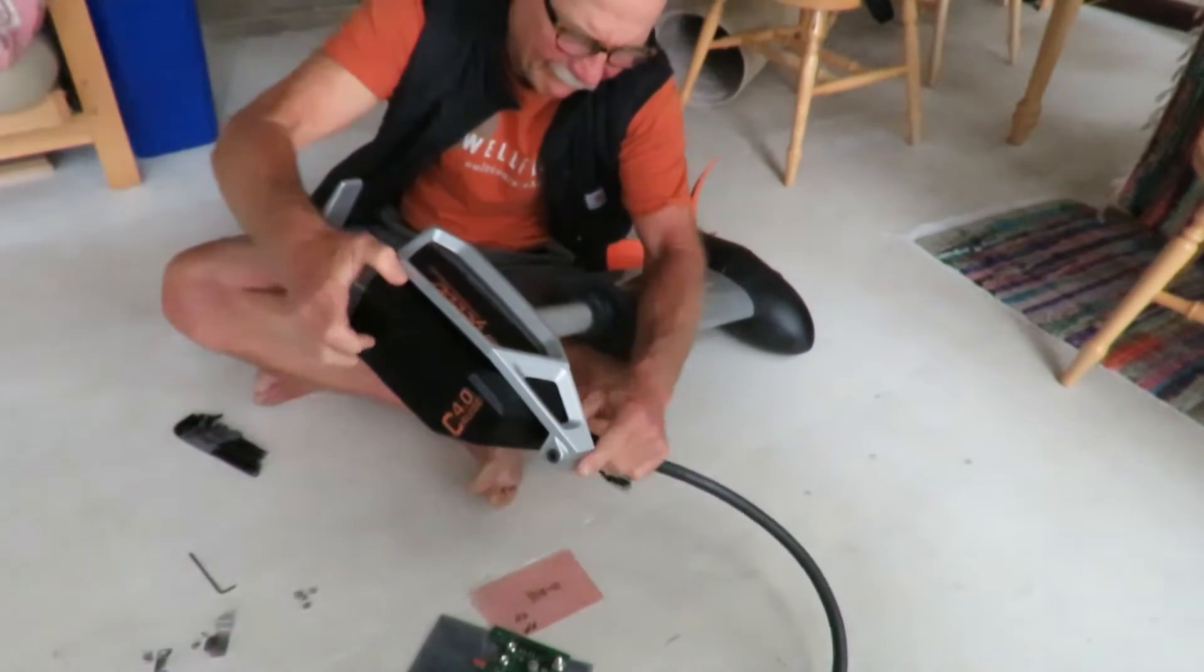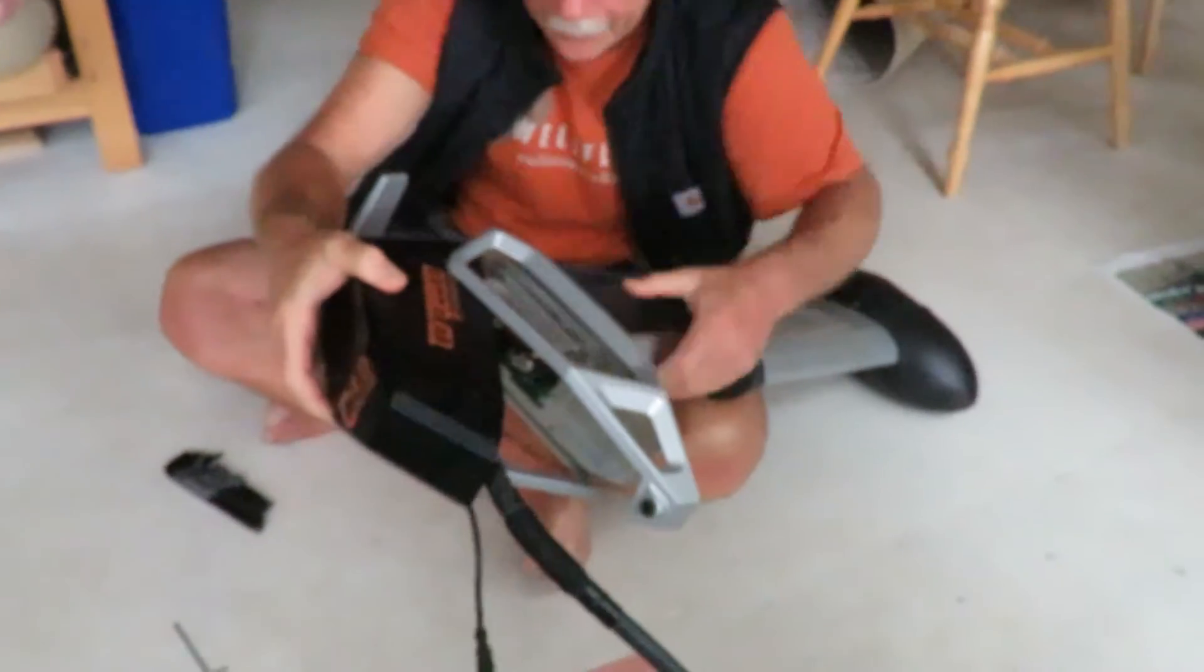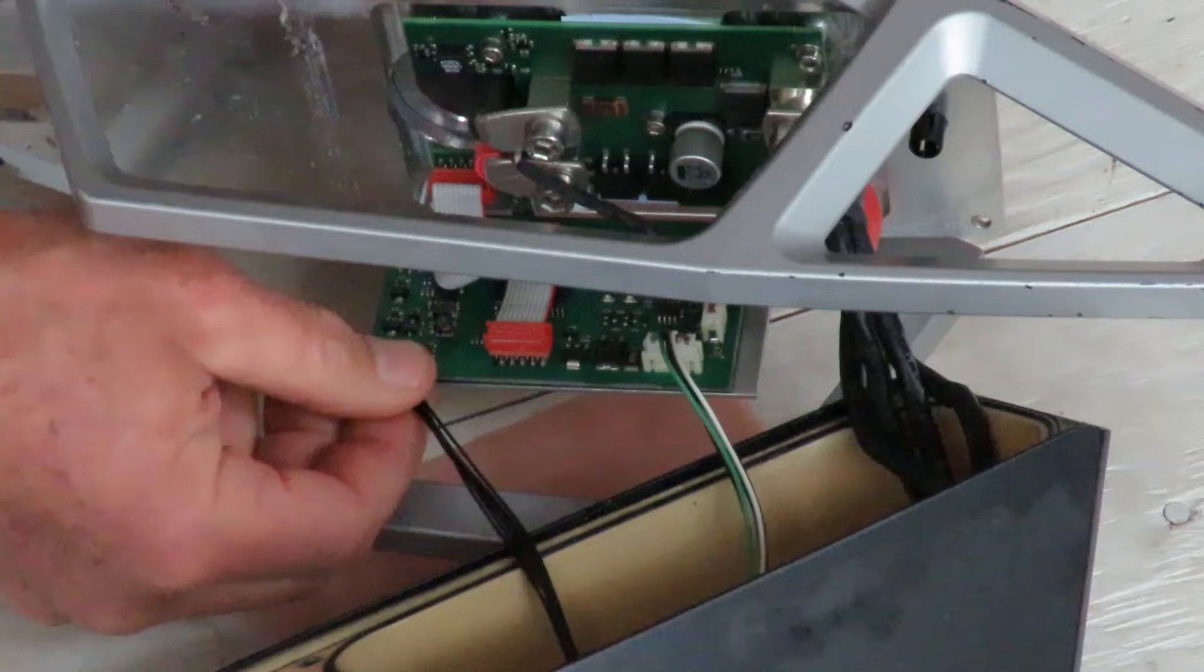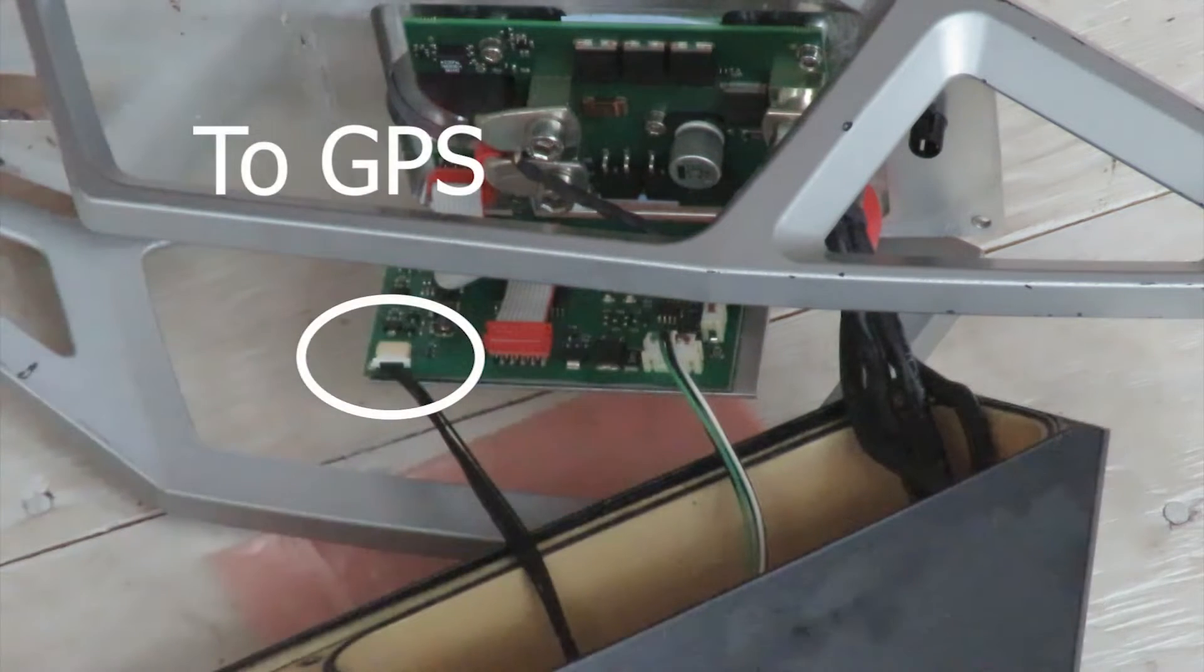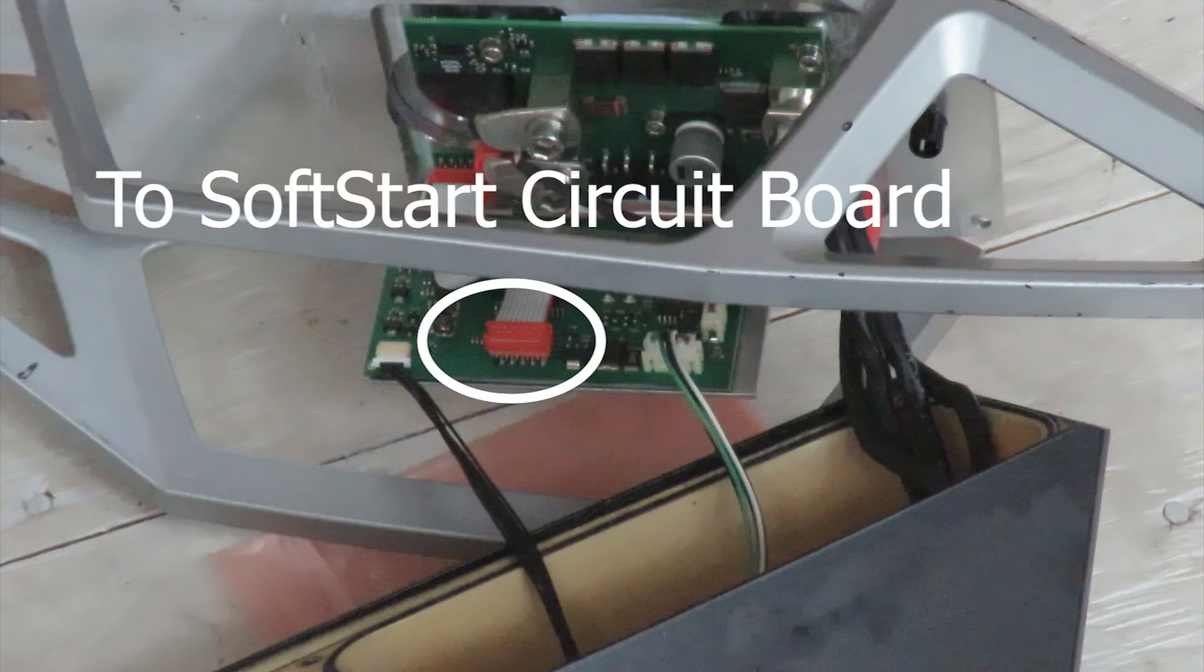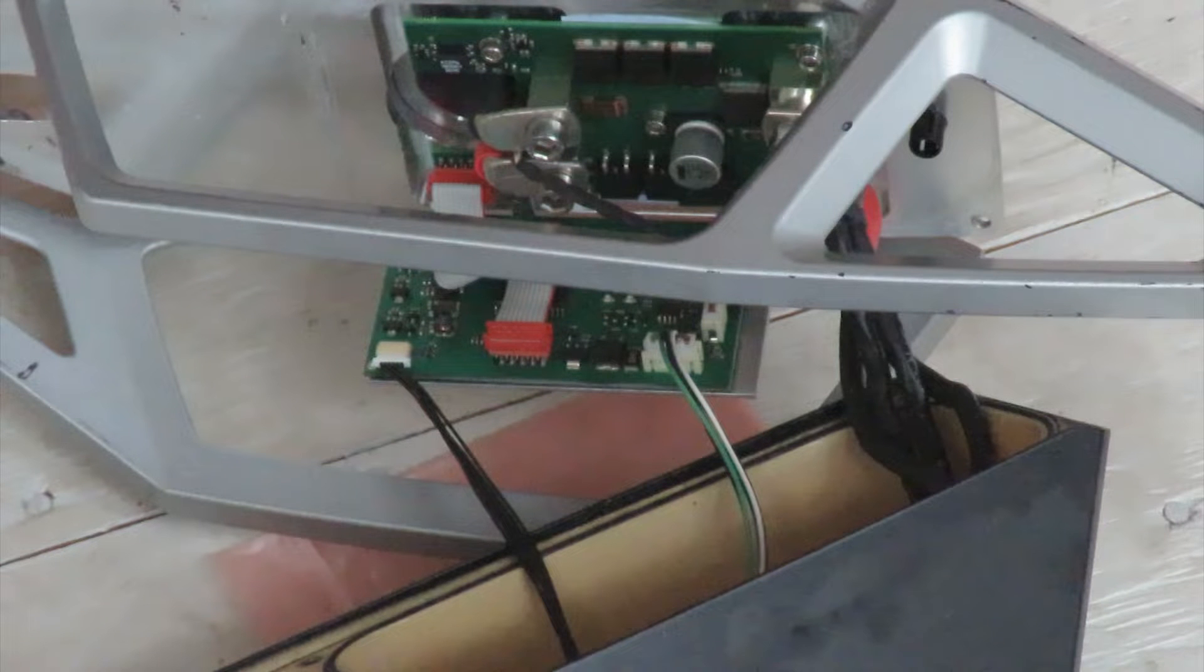And now we remove the top of the motor. There are some cables that are attached so you have to be careful. There's the GPS cable, the soft start circuit board cable, the cable to the motor and the cable to the throttle.